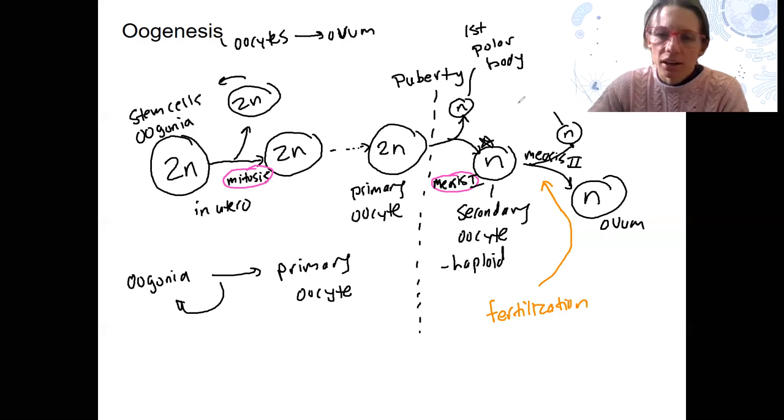This is our second polar body. So of all of this process, only one ovum develops, unlike four sperm, right? I'm going to circle my meiosis II.